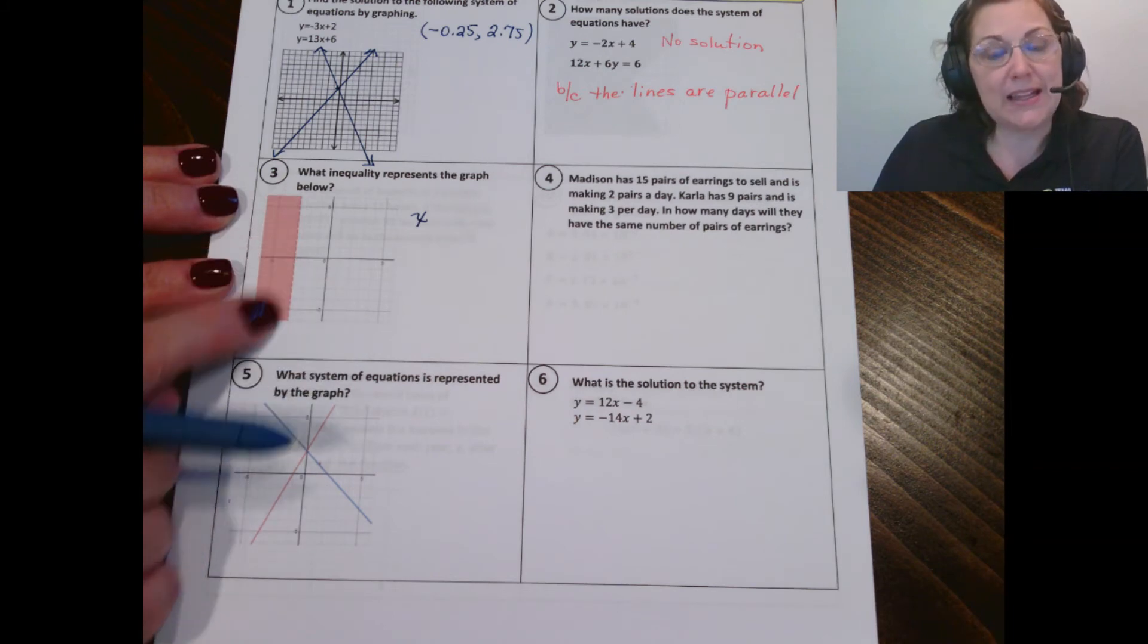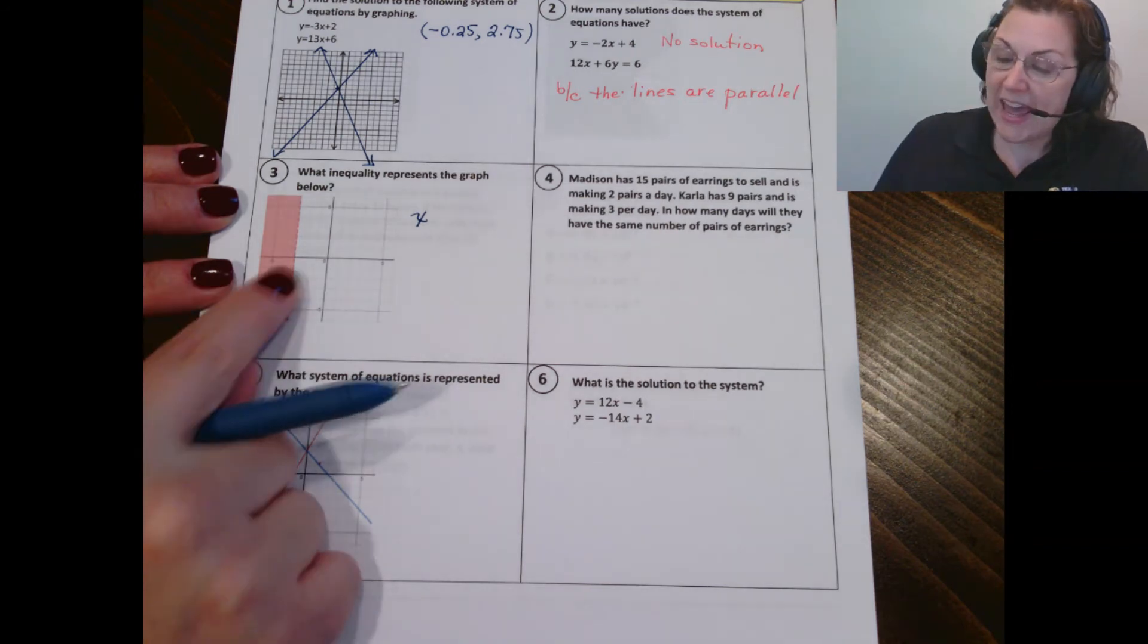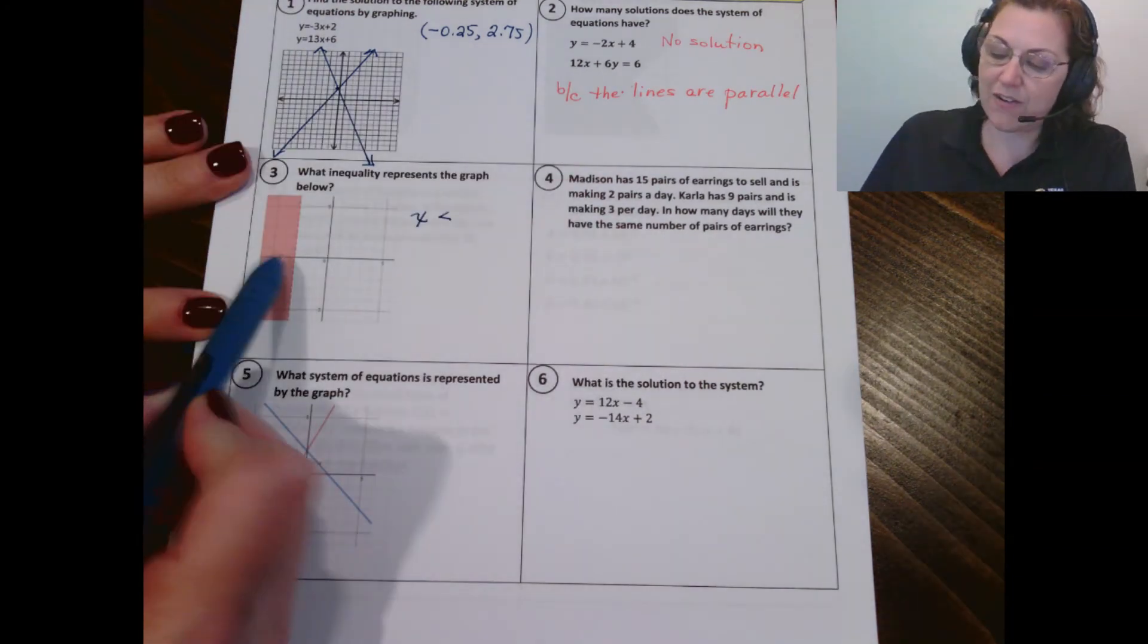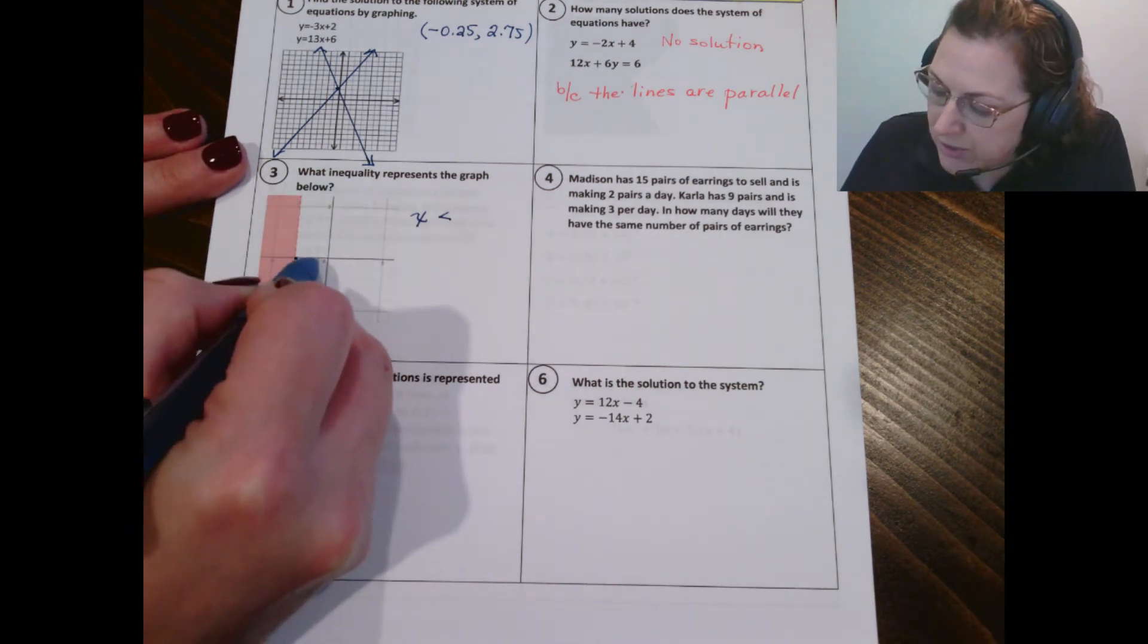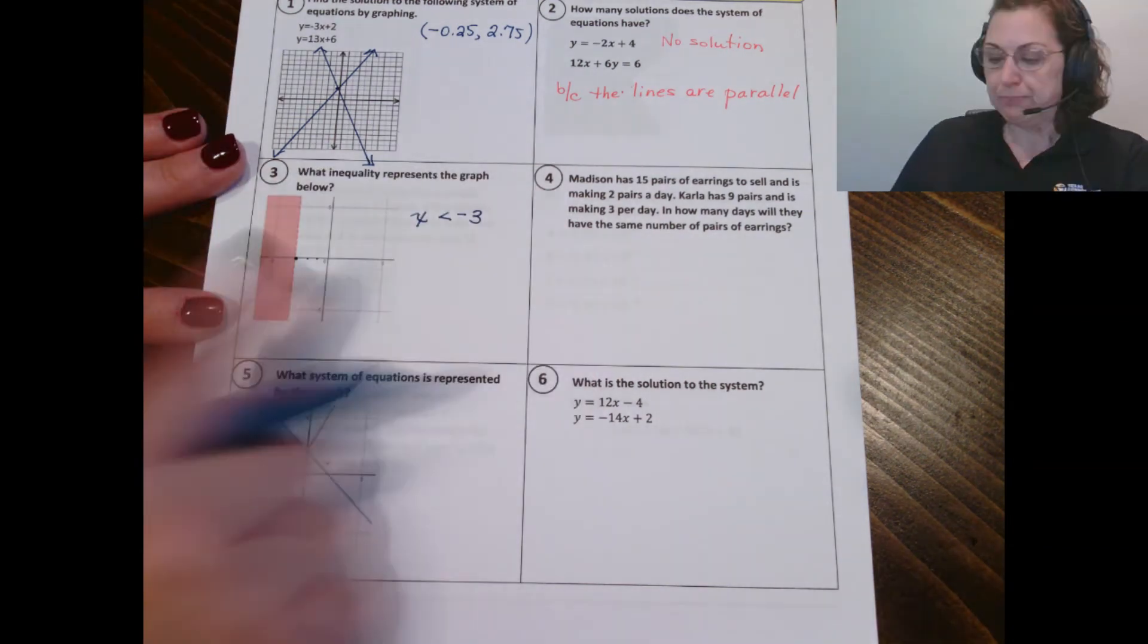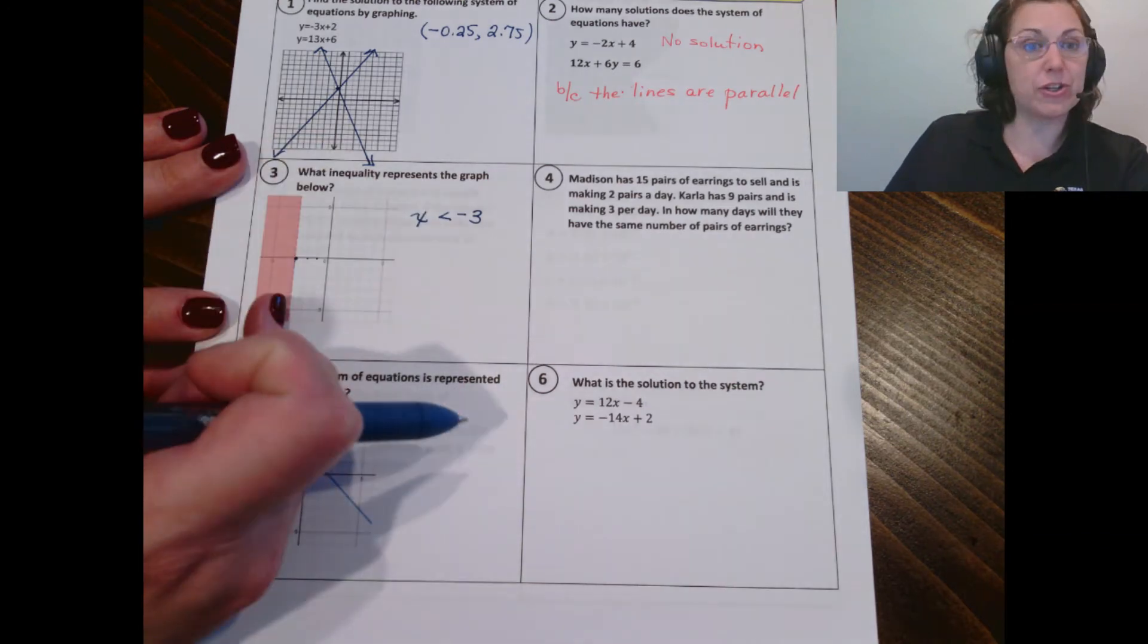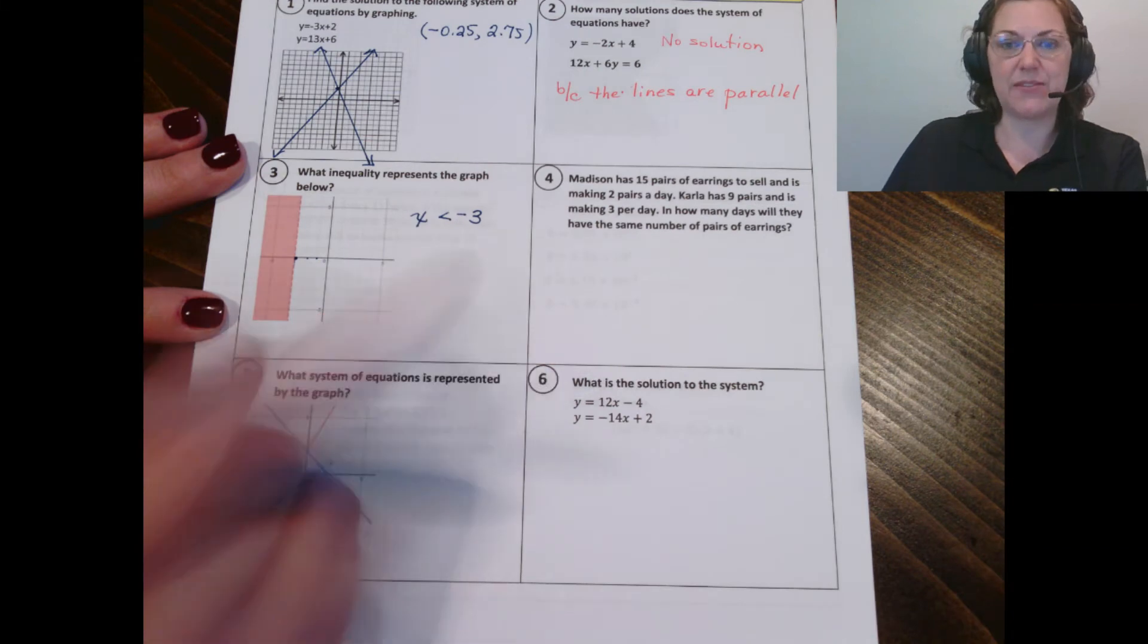I know that there's not going to be an equal to underneath it. So I know that X is going to be less than, and it's less than because it's shaded to the left, shaded to the area where X is less than this particular value right here, which is negative one, negative two, negative three. So let's recap. This is a dotted line. That's why there's not an equal to underneath our inequality. And it's X only because it's a vertical line here. So we're saying that all the values where X is less than negative three.